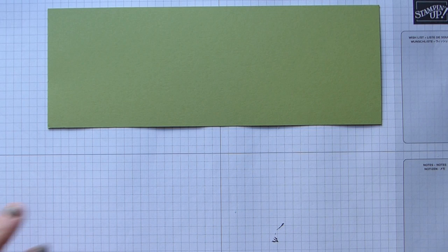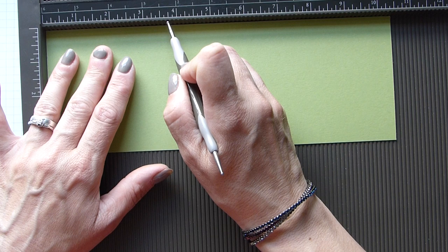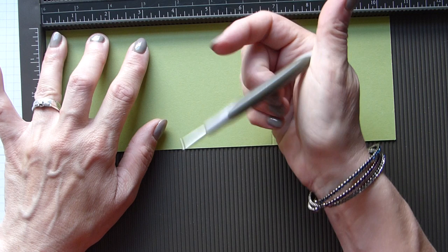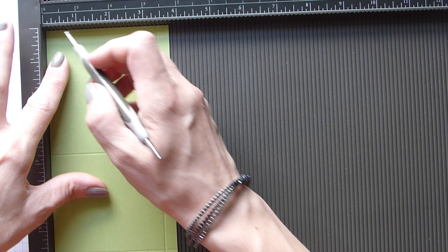I'm going to start with my cardstock first. Score on the long side at 3 and 3 quarters, rotate it completely and score the other end at 3 and 3 quarters. On the short side, we're simply going to score down both sides at 3 eighths of an inch. I'm going to rotate it and do it that way just so I know it's right.